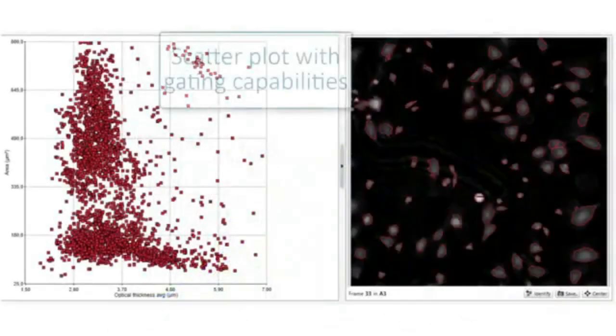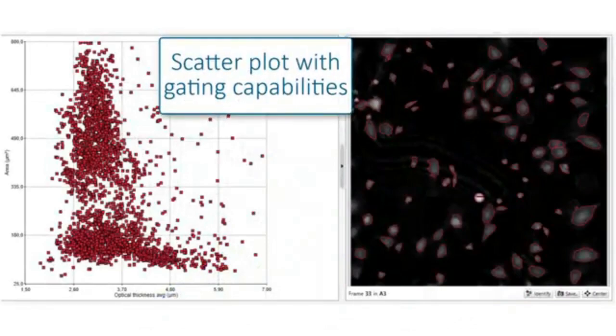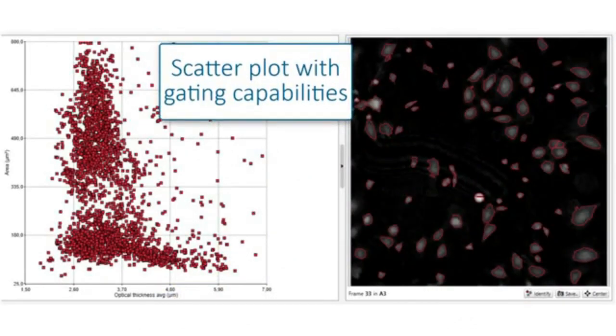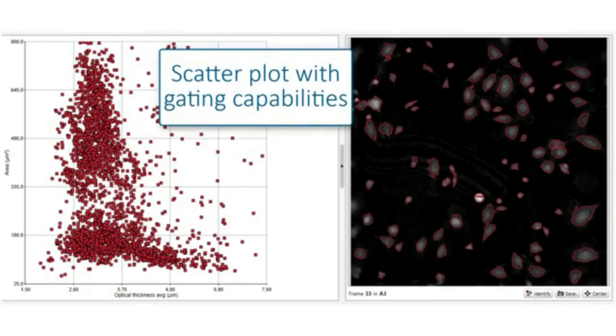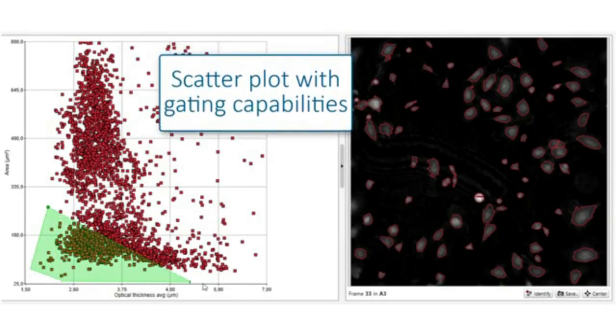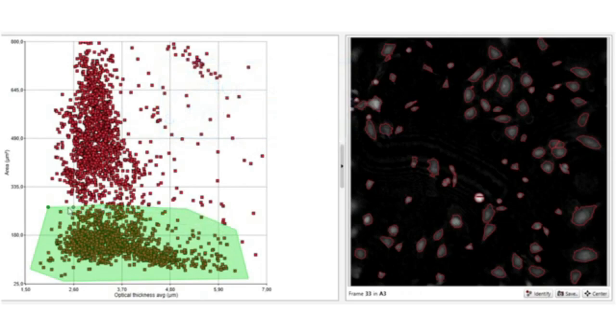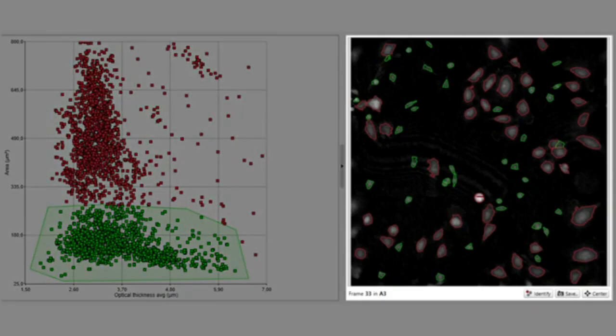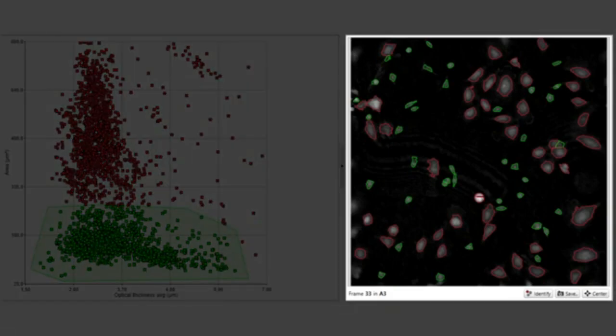The software also generates a scatter plot resembling flow cytometry analysis. Two parameters are plotted against each other, and the gate can be applied to group cells based on their properties. Here, the green gate defines the subpopulation of smaller cells. For easy identification, the gate color is applied in the images as well.